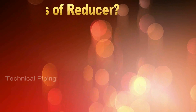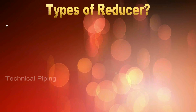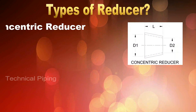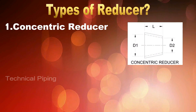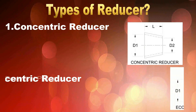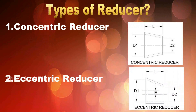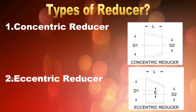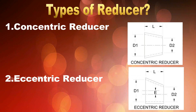Now let's see the types of reducers used in piping systems. Number 1: Concentric reducer. Number 2: Eccentric reducer.